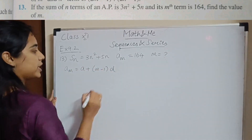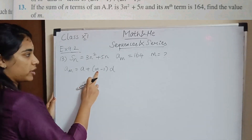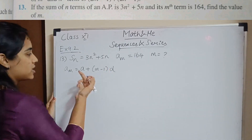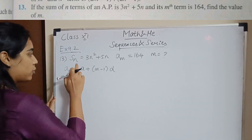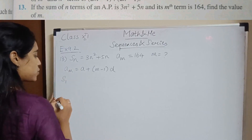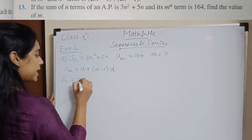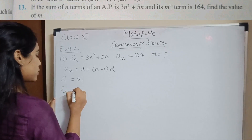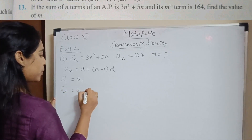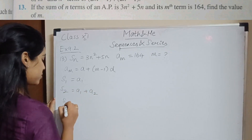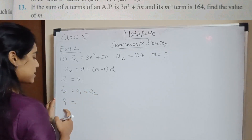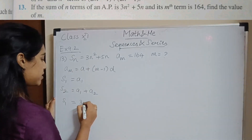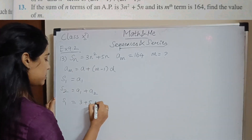In order to find m, you already know the value of am, so you need to know what a is and what d is. S1 equals a1 — the sum of the first term is the first term itself. S2 equals a1 + a2. So S1, substituting 1 into the equation, gives 3 × 1² + 5 × 1.